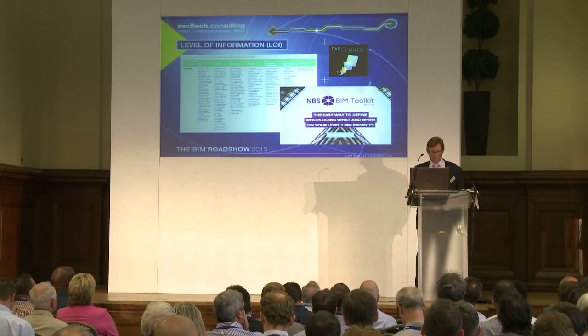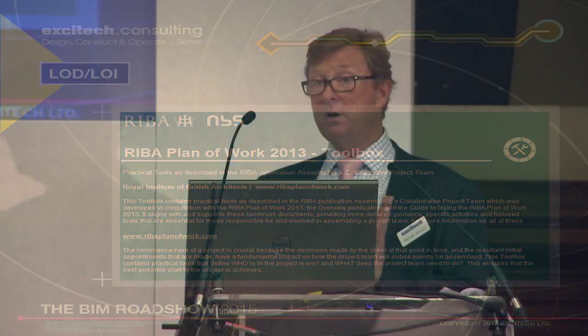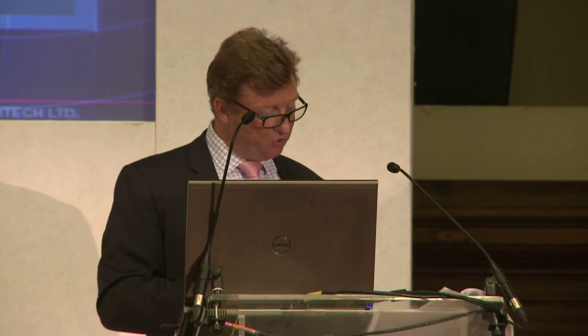The only information I can probably hang my hat on as being right going forward is space-related information. Space-related information is a good starting point because we know it's critical to the client in the management of that building going forward. What I want to manage now is the who, the what, the when, and the how — who has ownership of information, what information is required at what time, and how is that information structured and saved. I'm going to do that using a model element table.